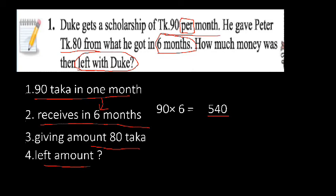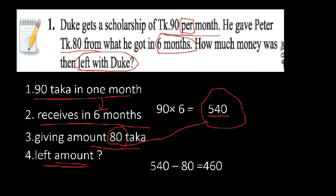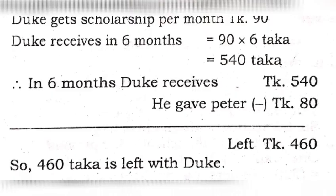From that we have to subtract 80 taka. So 540 minus 80 equals 460 taka. Our required answer is 460 taka. Here is the full answer pattern.